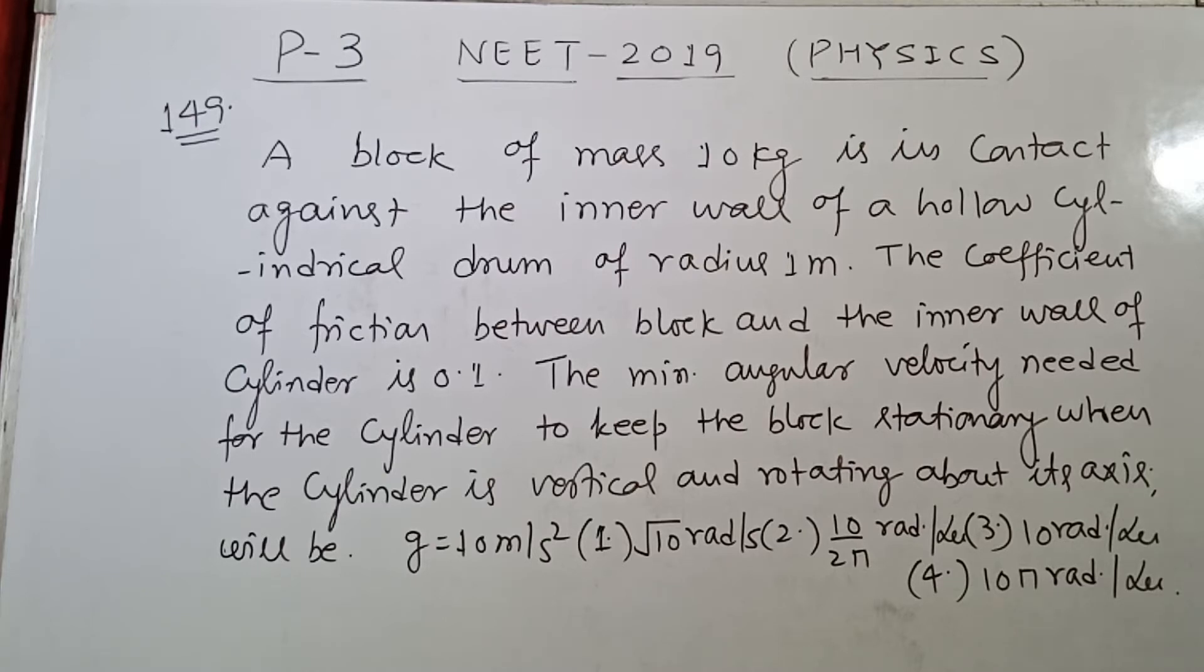G is given as 10 meter per second square and options are under root 10, 10 upon 2 pi, 10 radian per second, 10 pi radian per second. This question is known as the death well or rotor problem.